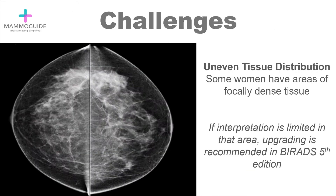There are some challenges with assigning mammograms to those four categories. One of the main ones is that not everyone's breast tissue is evenly distributed — some women have areas of focally dense tissue, a patch or clump in one particular area. The newest 5th edition of the BIRAD manual states that if interpretation is limited in that area, they recommend upgrading. So if this was normally a category B but you see one denser clump, you can upgrade it to category C, heterogeneously dense.